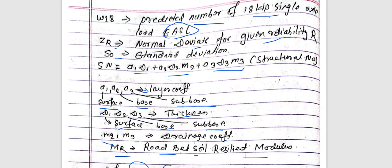Step one: find the normal deviate factor ZR for given reliability.